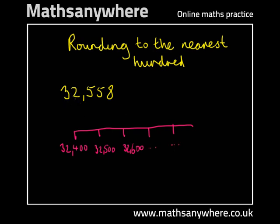Where on this line is 32,558? We know it's between 32,500 and 32,600 — it's probably just about here. Rounding means we need to go to the nearest increment on the number line, and the nearest hundred is 32,600.